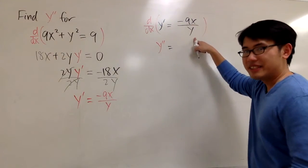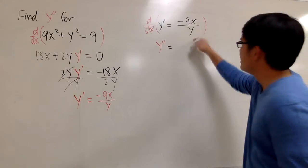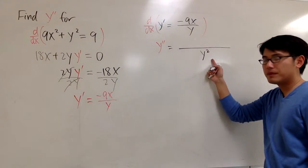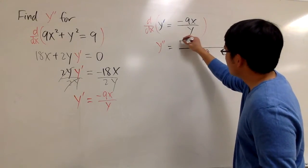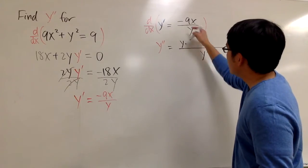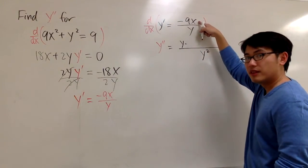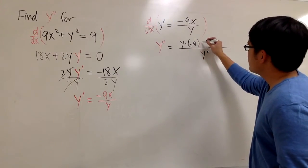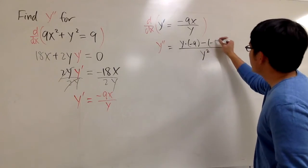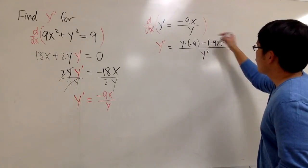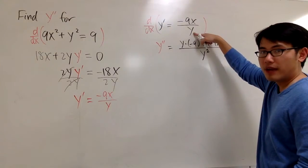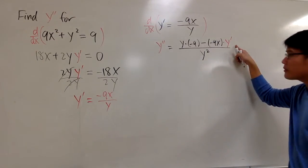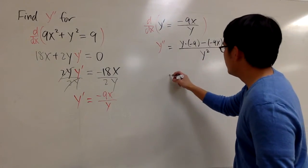It's a quotient, negative 9x over y. So we have to use the quotient rule. That's square the denominator first. We have y² on the bottom. And then the quotient says, I'm going to write down the bottom function, which is y, and multiply by the derivative of the top. And the derivative of negative 9x is negative 9. And then we are going to subtract the top function, which is negative 9x times the derivative of the bottom. And the derivative of y is y'. And as we can see, a few things that we can simplify.